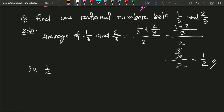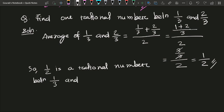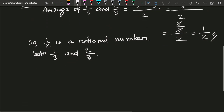So 1 by 2 is a rational number between 1 by 3 and 2 by 3. This type of question can be done by the average method. Now we can have some different problems.